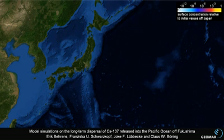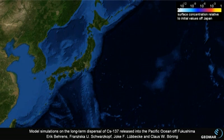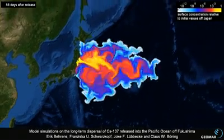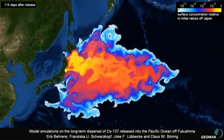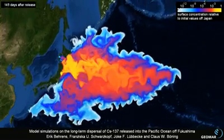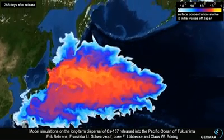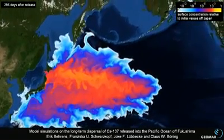The following animation shows the spreading of our dye at the ocean's surface. The color represents the concentration of the tracer relative to the initial concentration in the coastal area of Fukushima at the end of the injection period. The tracer invades the highly energetic Kuroshio regime within the first weeks after the release and starts spreading meridionally due to the eddies dominating the flow field in this area.